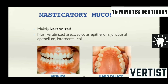Coming to the first, that is masticatory mucosa. It is mainly keratinized and includes the gingiva and the hard palate. However, there are some non-keratinized areas in the gingiva — that is the sulcular epithelium, the junctional epithelium, and the interdental col.